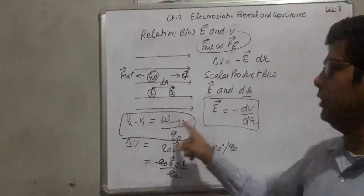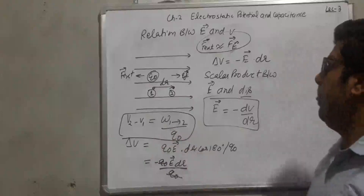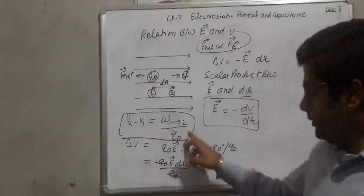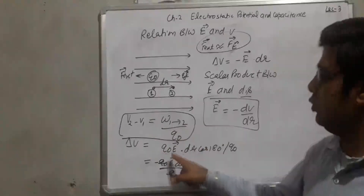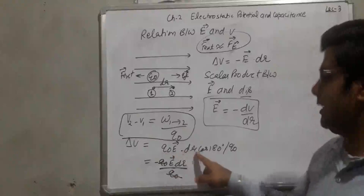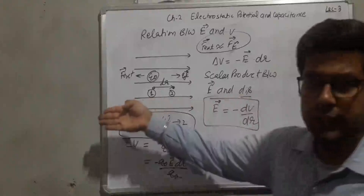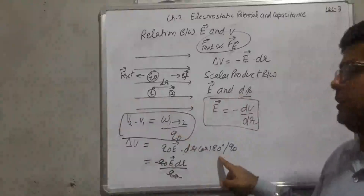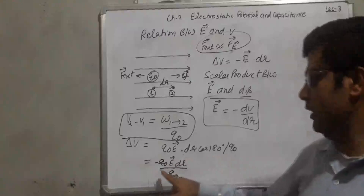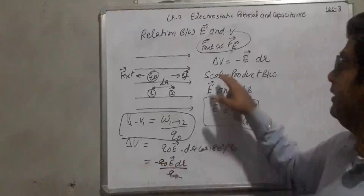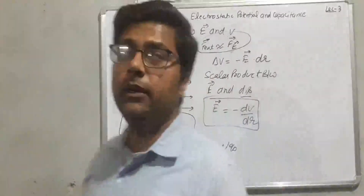The work done to take the charge from point 1 to point 2: work done = force × displacement = Q0 · E · dr · cos(180°), divided by Q0. Q0 cancels, giving delta V = −E · dr.